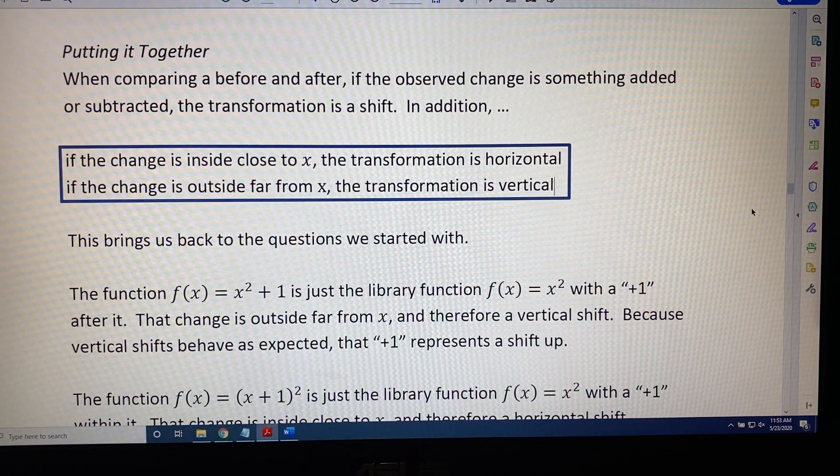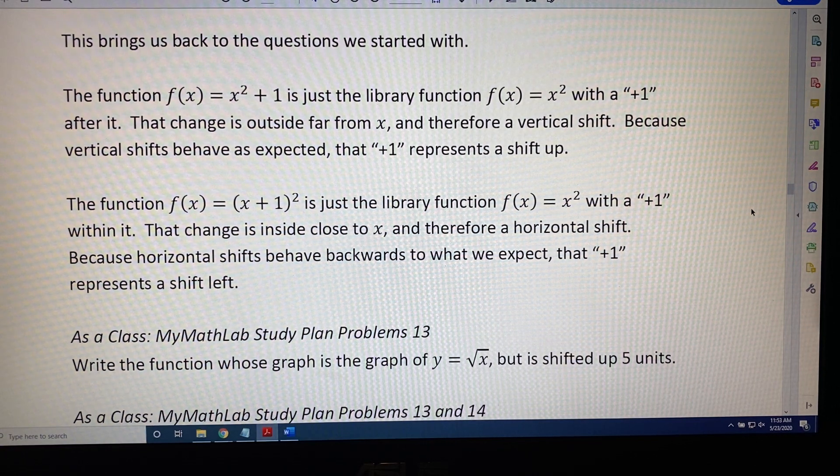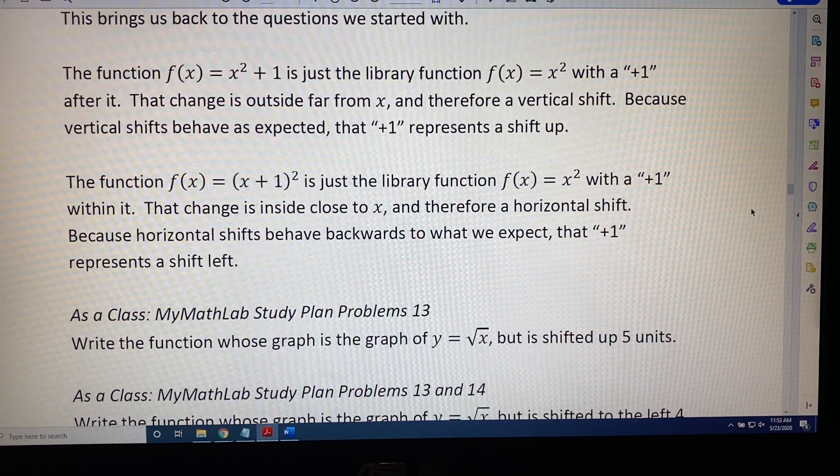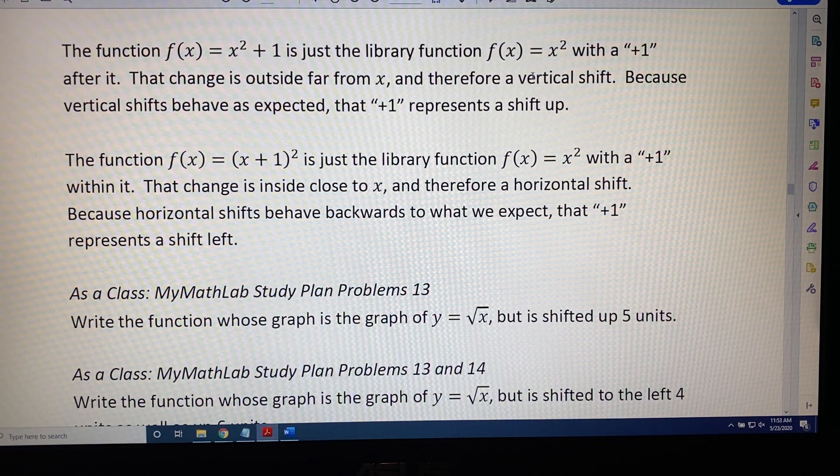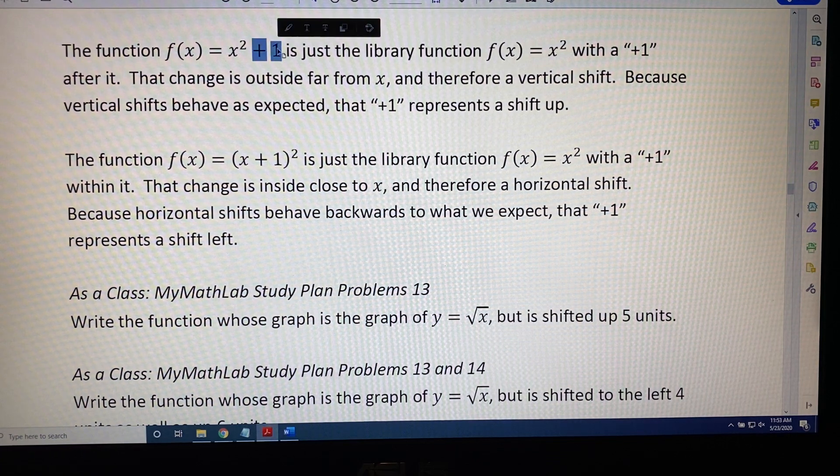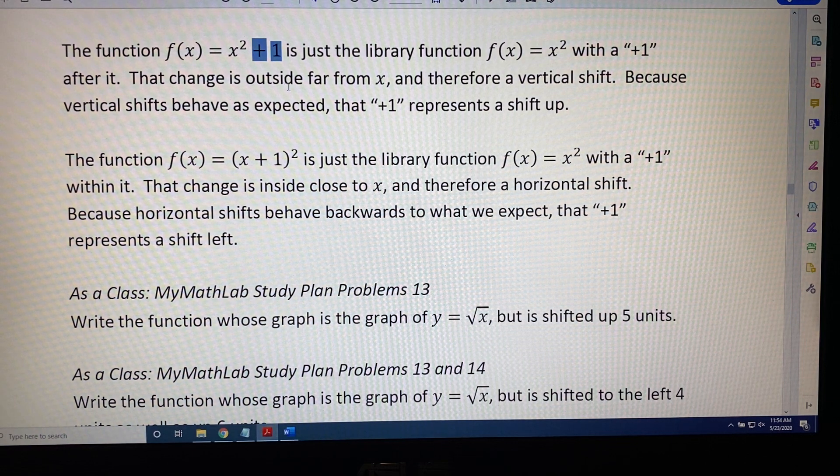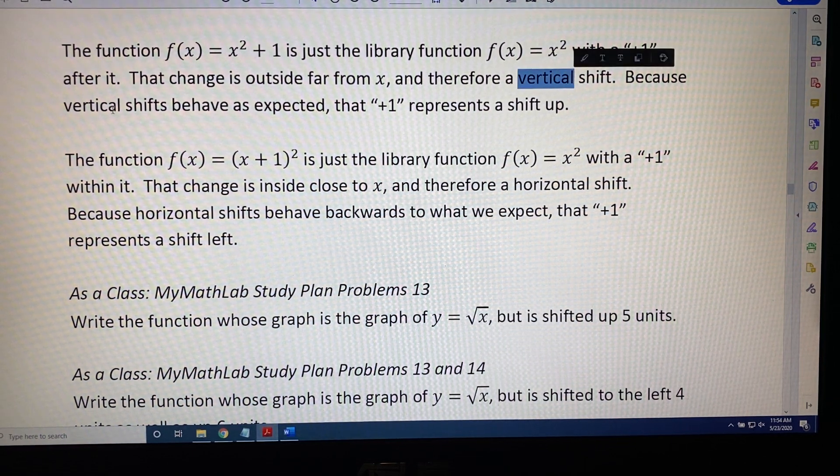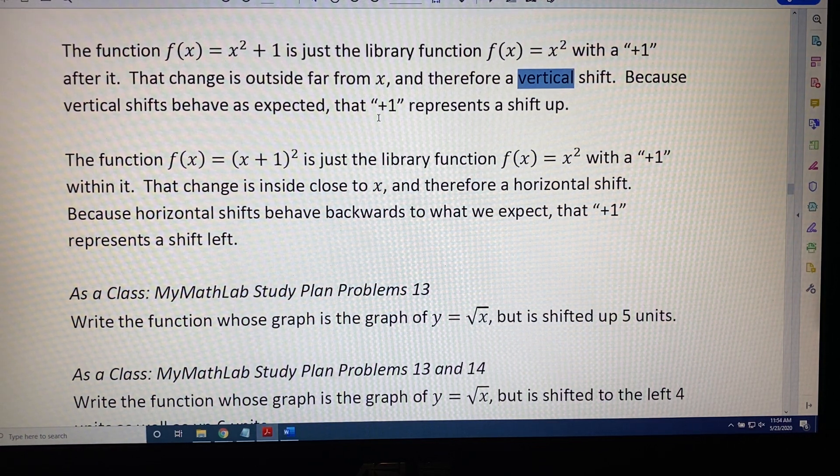This brings us back to the questions we started with when we first began this topic, graphing transformation techniques. The function f(x) = x² + 1 is just the library function f(x) = x² with a plus one after it. That change is outside far from x and therefore represents a vertical shift. Because vertical shifts behave as expected, that plus one represents a shift up.